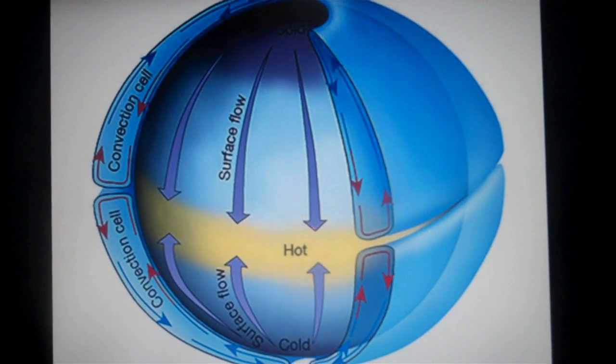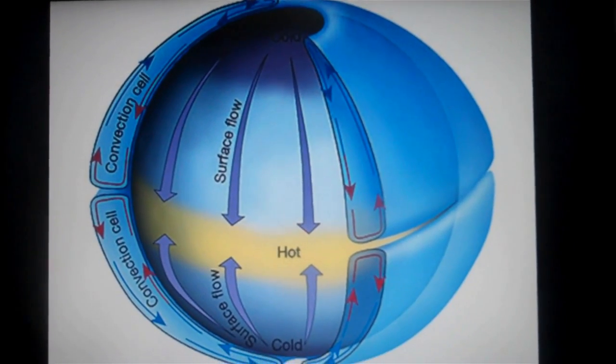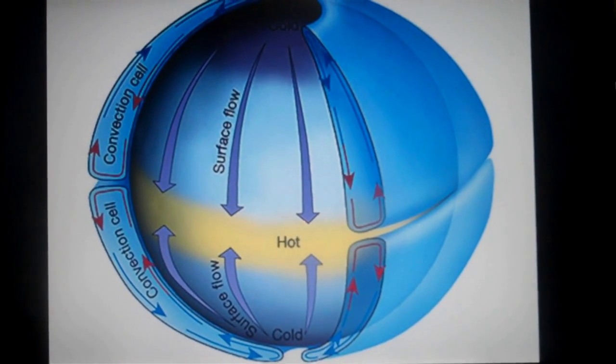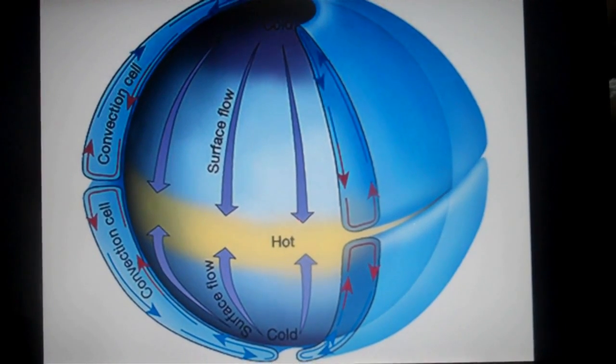At first it was believed that this transport of energy was occurring through a one cell circulation. It proposed that air rose at the equator, moved poleward, sank at the poles, and was diverted back down to the equator.